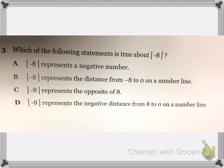Or D. The absolute value of negative 8 represents the negative distance from 8 to 0 on a number line.